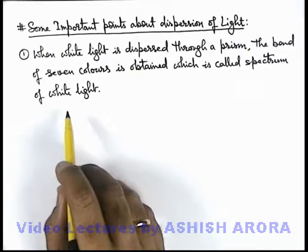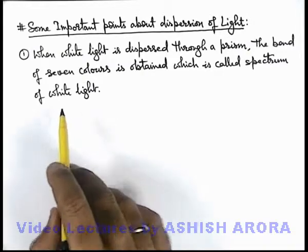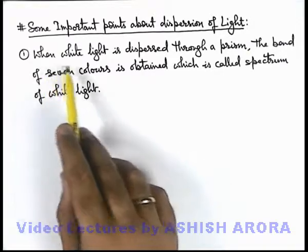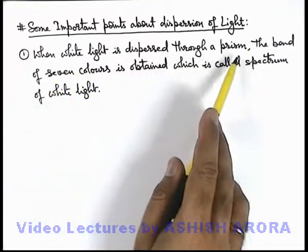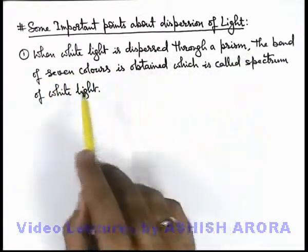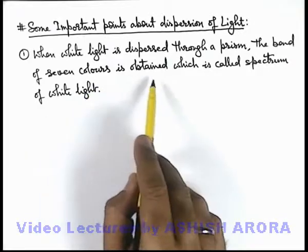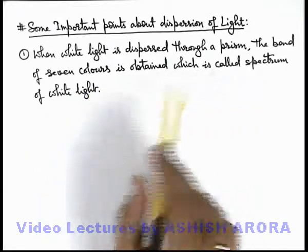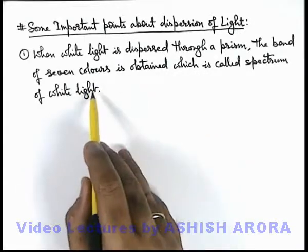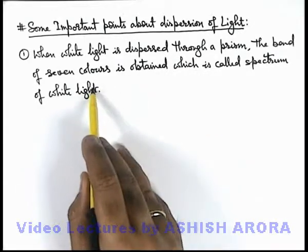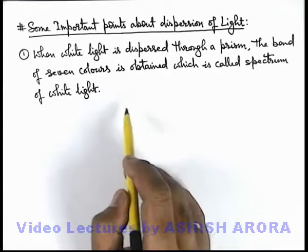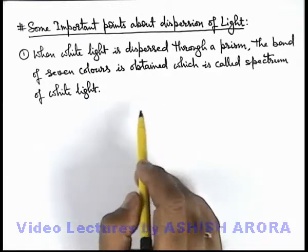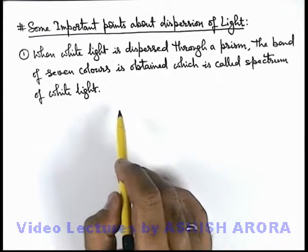The first point is: when white light is dispersed through a prism, a band of 7 colors is obtained which is called the spectrum of white light. This we have already seen in an activity in previous sections.